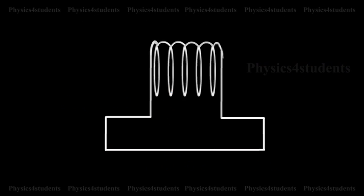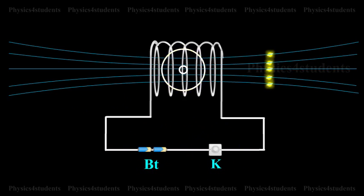A coil is connected in series with a battery and a key K. On pressing the key, the current through the coil increases to a maximum value and correspondingly, the magnetic flux linked with the coil also increases.